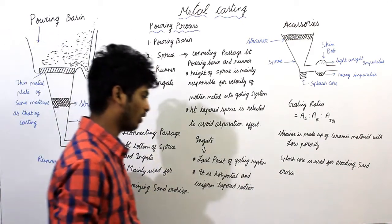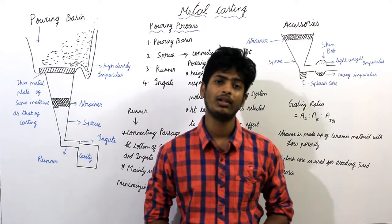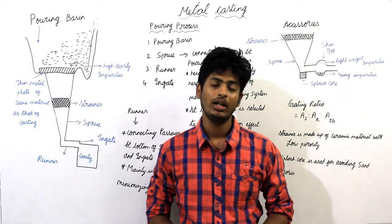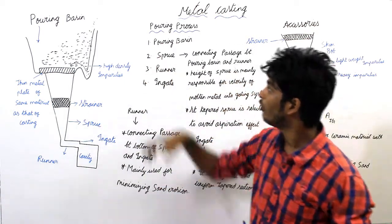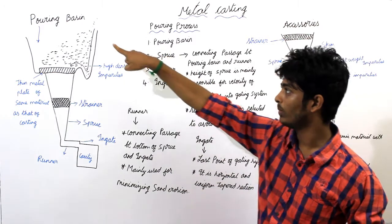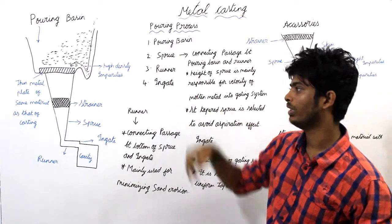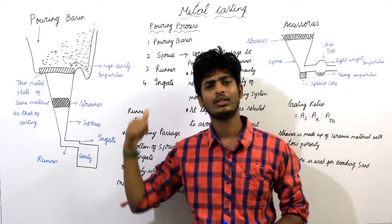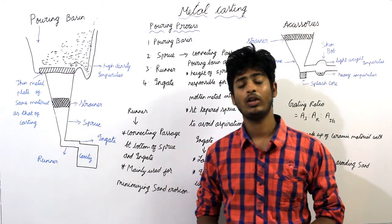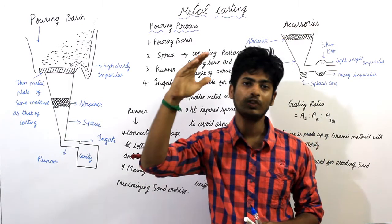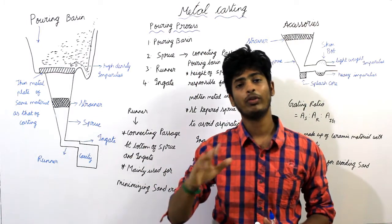Next topic is pouring process. In the metal casting process, the molten metal is always poured in the casting cavity in terms of gating systems. There are four major elements of the gating system: one is pouring basin, next we have sprue, third is runner, fourth is ingate. We have this gating system in order to avoid oxidation, to avoid the contact of atmosphere with the molding cavity to prevent oxidation.